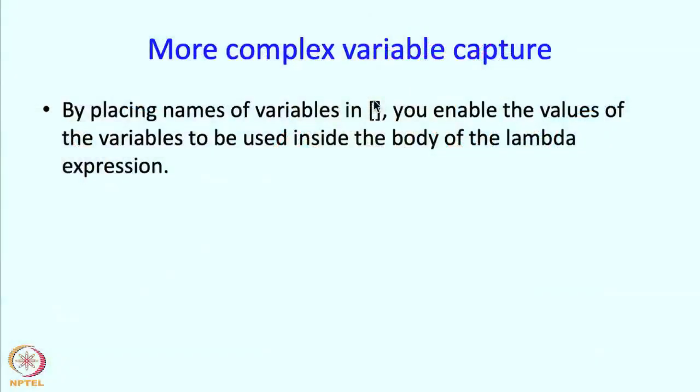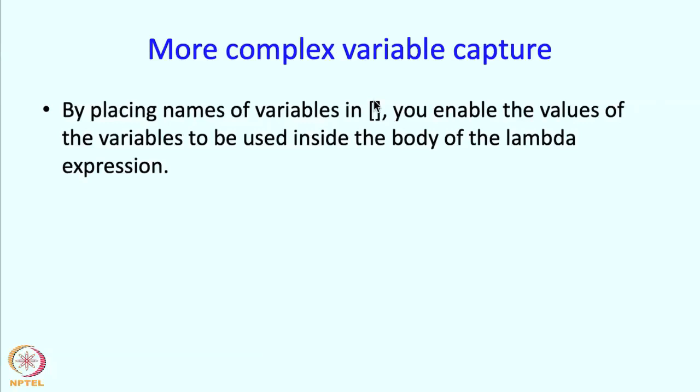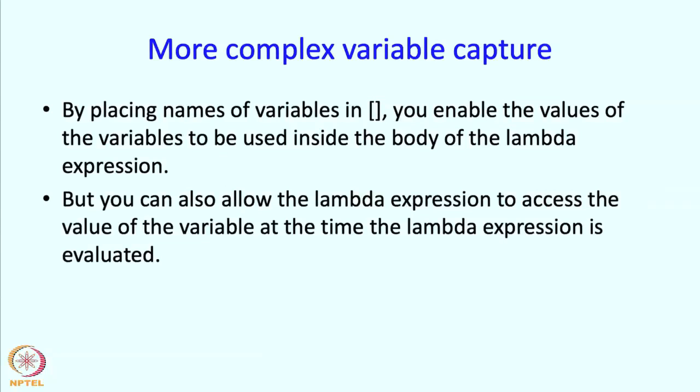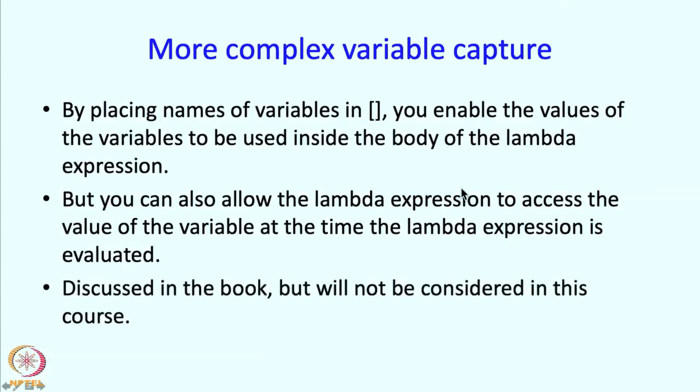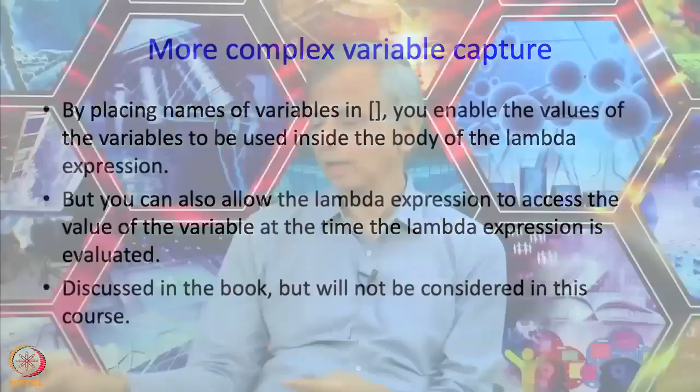Now it turns out that you can do more variable, more complex variable capture. So what we have seen so far is that if you place names of variables inside this, you enable the values of the variables to be used inside the body of the lambda expression. But you can also cause the lambda expression to not take the current value but take the value of the variable at the time the lambda expression is actually evaluated. So during the time when the variable, when the expression is evaluated and then when the value changes, you can figure out what the value is and so you can do that and it is discussed in the book but it will not be considered in this course because this is just a little bit too elaborate and we are not going to really make interesting use of it.